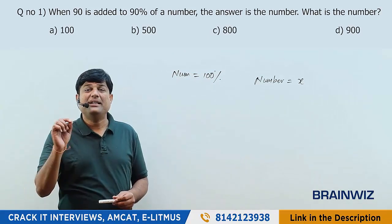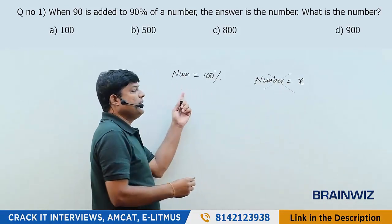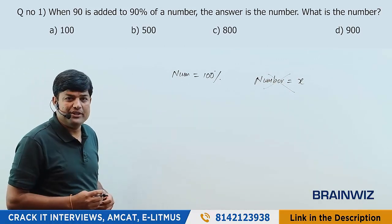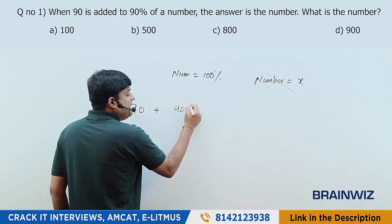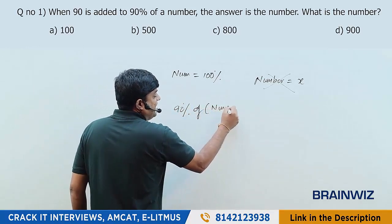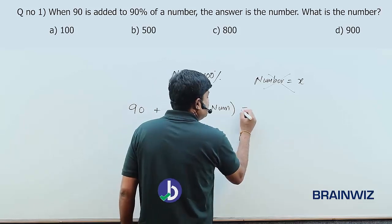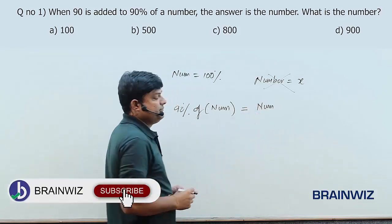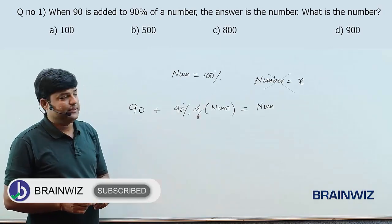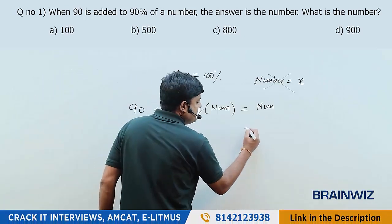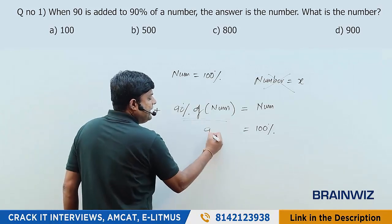We're going with this strategy: read the question carefully. If 90 is added to 90% of the number, the result is the number itself. The number is 100%. This thing here stands for 90% of the number.